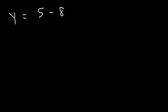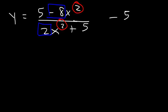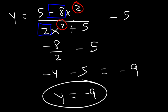Try this one: 5 minus 8x squared divided by 2x squared plus 5, then minus 5 on the outside. The degrees of the top and bottom are the same, so divide the leading coefficients: negative 8 divided by 2, minus 5. That's negative 4 minus 5, which is negative 9. So the horizontal asymptote is y is equal to negative 9.